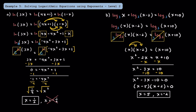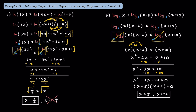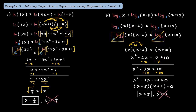Subtracting x and 10 from both sides, we get x squared minus 3x minus 10 is equal to 0. Since it happens to be factorable, we factor into the quantity of x minus 5 times the quantity of x plus 2 is equal to 0. The two values are x equals positive 5 and x equals negative 2. Checking for extraneous solutions, x equals negative 2 gives negative values inside the logarithms, so it's extraneous, and our final answer is just x is equal to 5.